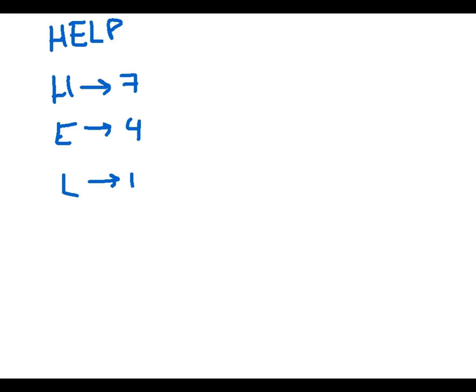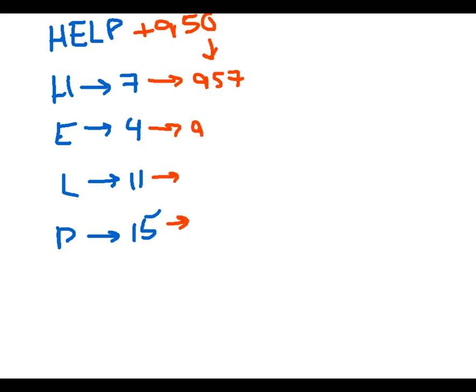Now we're going to choose a positive integer and keep it secret. Let's suppose we pick 950 for our integer. I'm going to go through the string of numbers and add that integer to each of my numbers. So my message HELP, which was translated into 7, 4, 11, 15, is now going to say 957, 954, 961, 965.